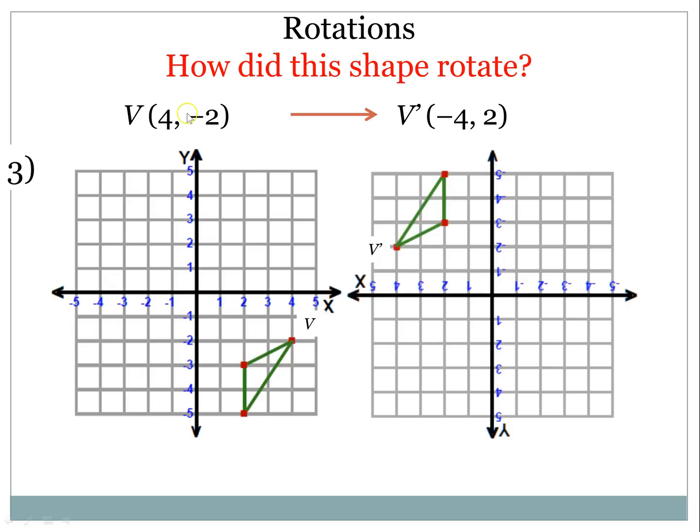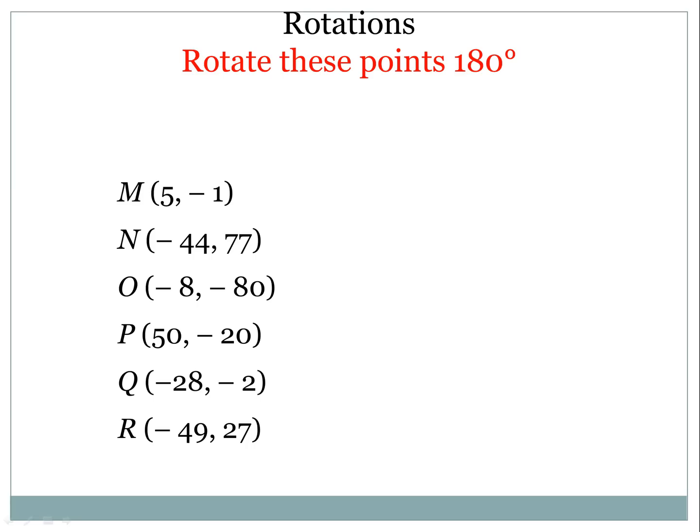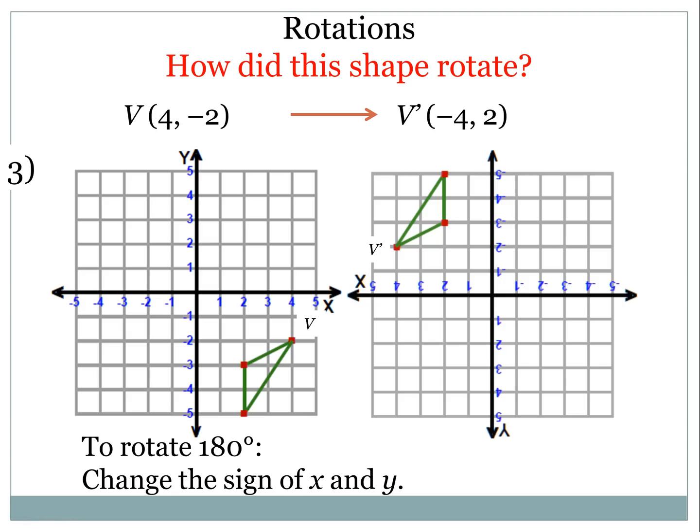So they didn't switch places, but it looks like the way to rotate a shape 180 degrees, or point 180 degrees, is just to change the sign of x and y. That's all we're doing.